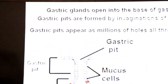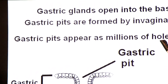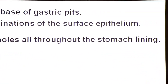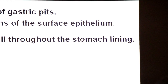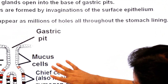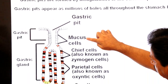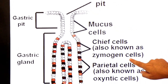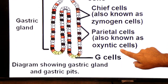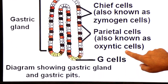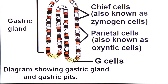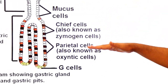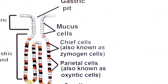Now, in the gastric glands there are several types of secretory cells: mucus cells, chief cells (also known as zymogen cells), parietal cells (also known as oxyntic cells), and G cells (gastric cells). Ab hum in cells ke functions padhenge.